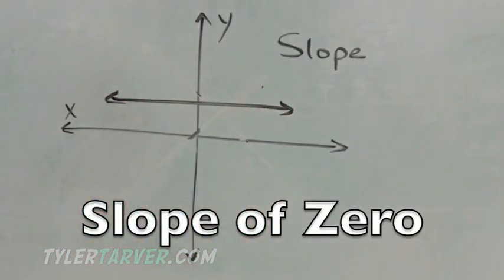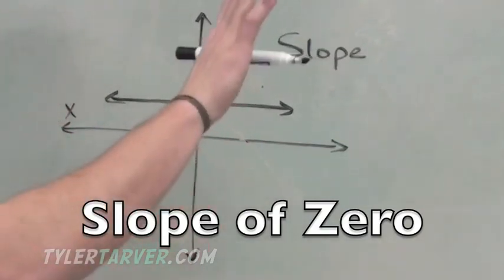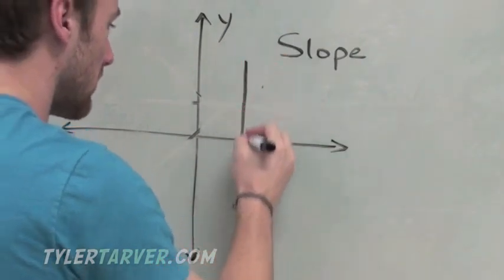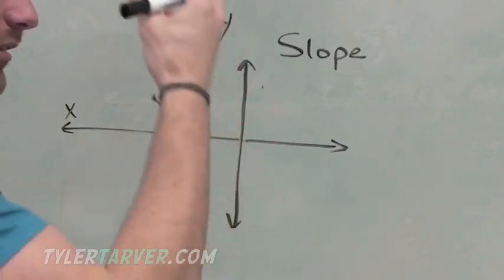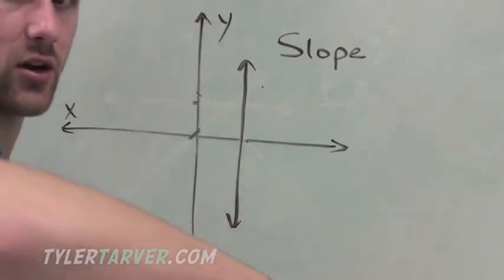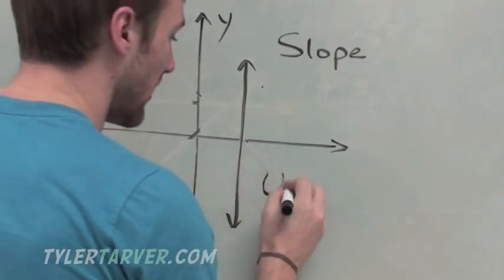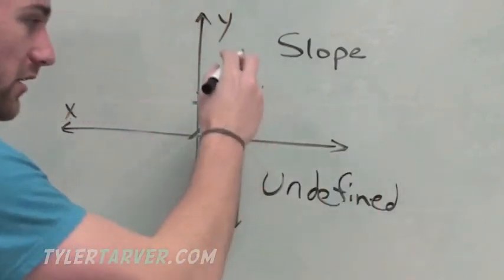Now check out this line. Is that line going up or down? No. So it's not falling or rising. Therefore it's just zero. Now this line is going straight up and down. That means it's like falling off a cliff. Going straight up and down, it has no slant to it. Therefore it is called undefined.